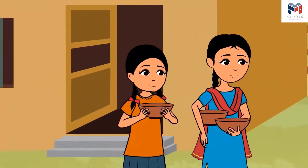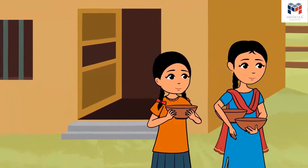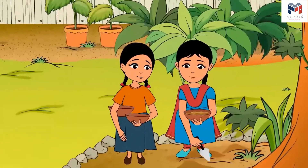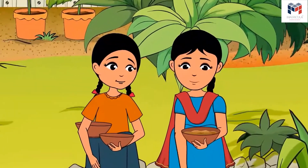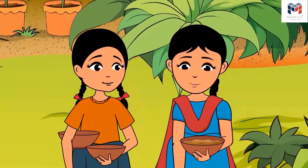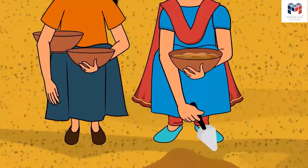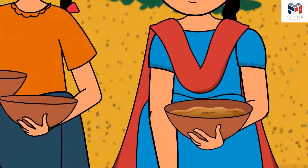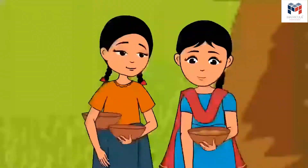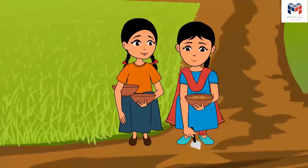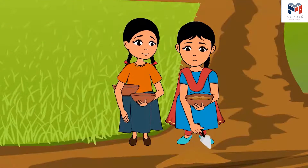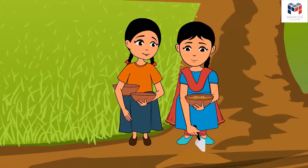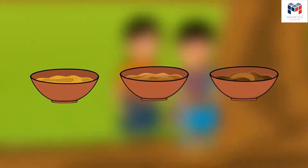Minu and Nilu take three utensils, then walk towards Ramu Kaka's garden to collect some soil. They also collect some sandy soil, and take a third sample from Shankar Kaka's field. On returning home, they put the different samples into three separate utensils.